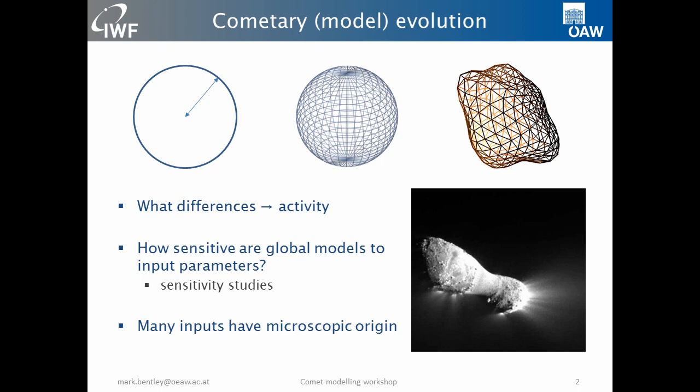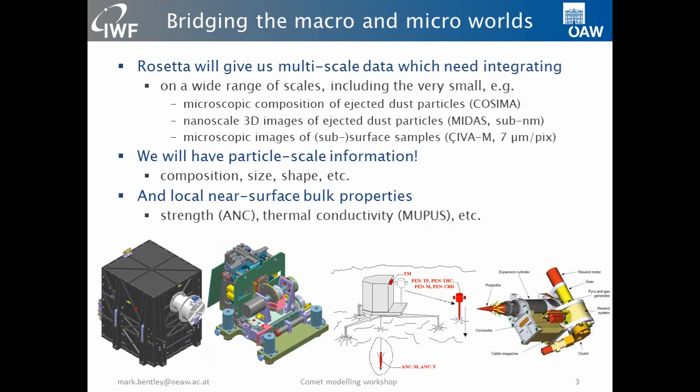With Rosetta, of course, we have this unprecedented time to study the evolution, but also an unprecedented range of length scales. We have data from really nanometers to micrometers up to the global observations of the nucleus and the coma. And somehow we need to integrate these into a coherent picture that makes sense as much as possible.